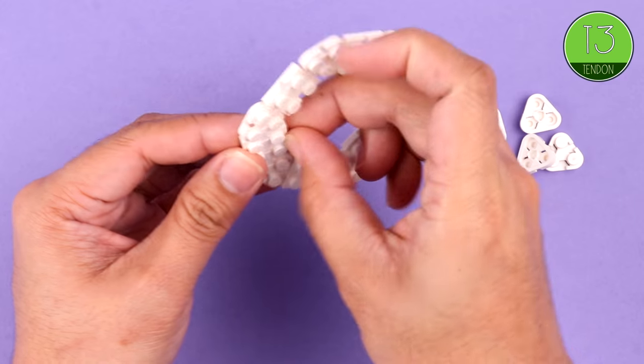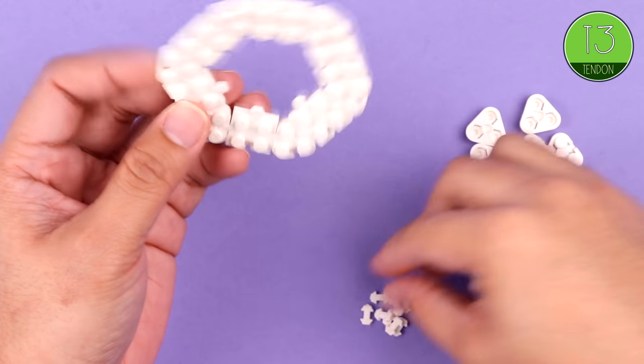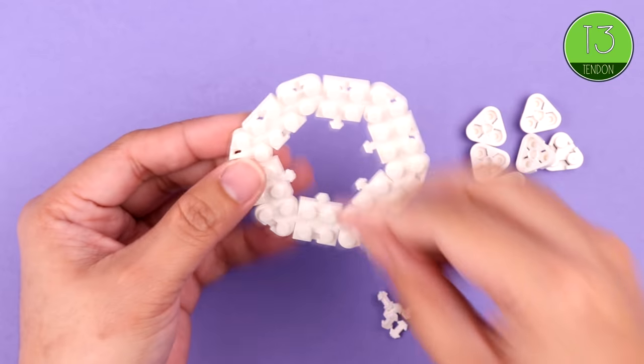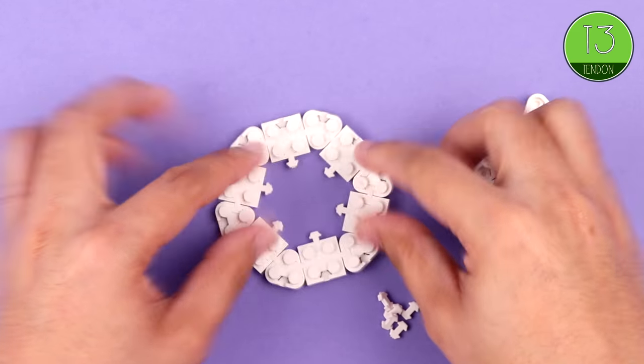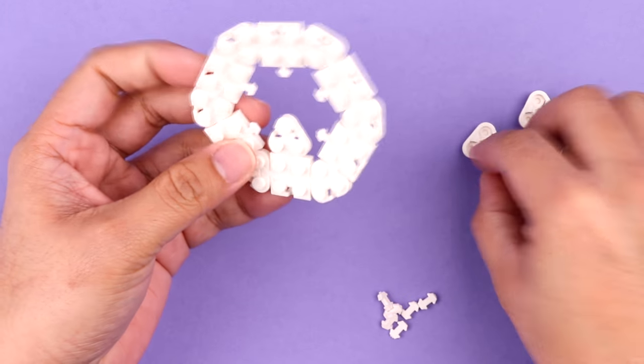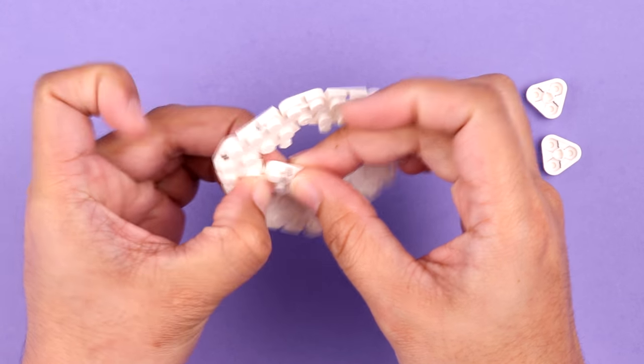Now we're going to insert T3 tendons around the inside of the ring. And we're going to then connect triangle bricks to fill in the gaps. So one triangle brick for each of the T3 tendons in the middle.